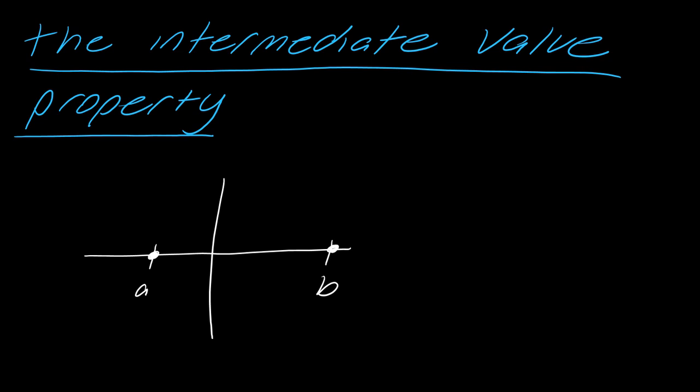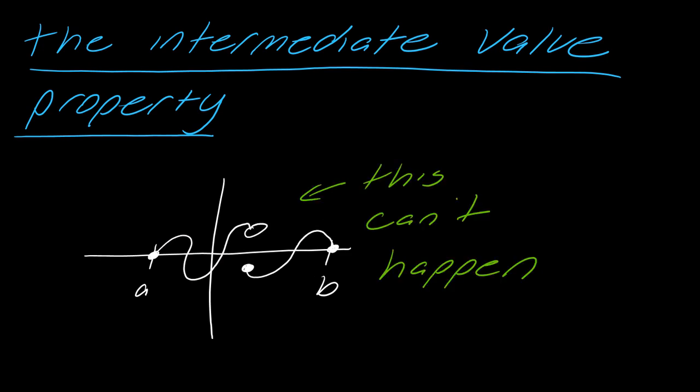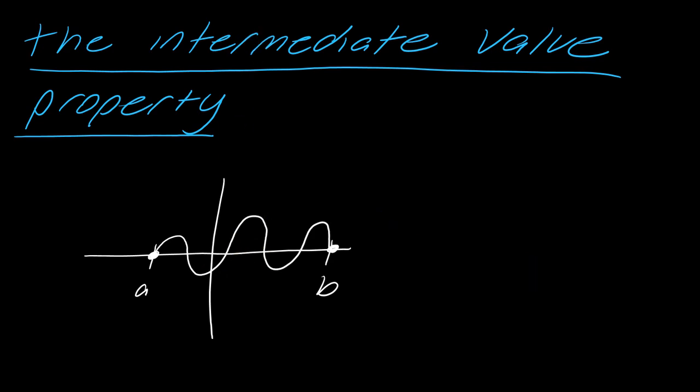And so what the intermediate value property says is that basically you have all the values filled in. So maybe put another way, what can't happen is you can't have something like this happen. This would be a function that does not have the intermediate value property. So it's got to be all filled in, and it doesn't have to look like this, it can look like whatever, but you get the idea.